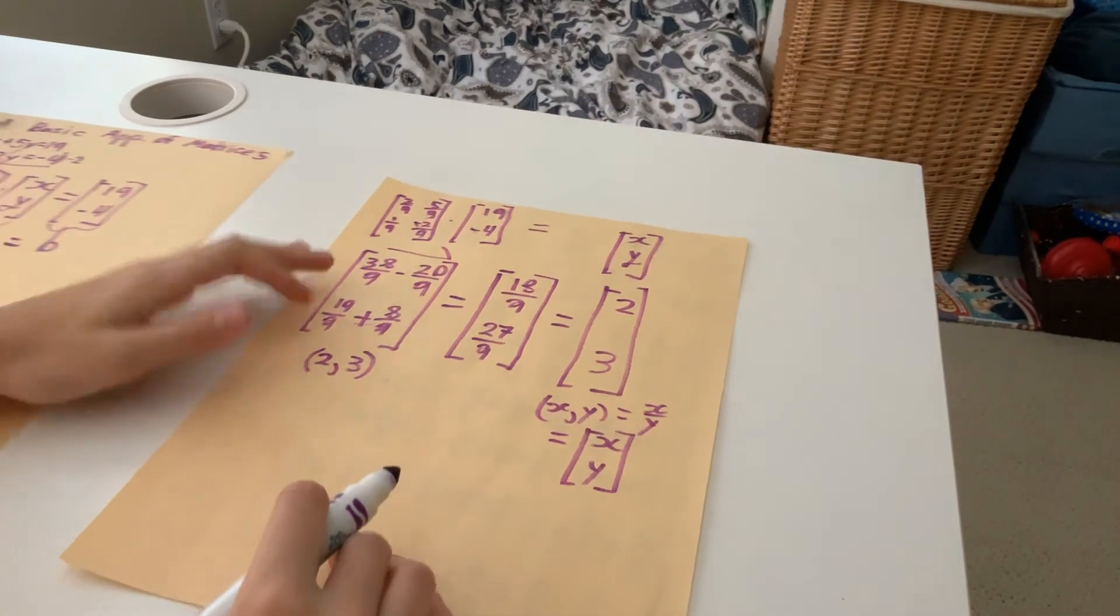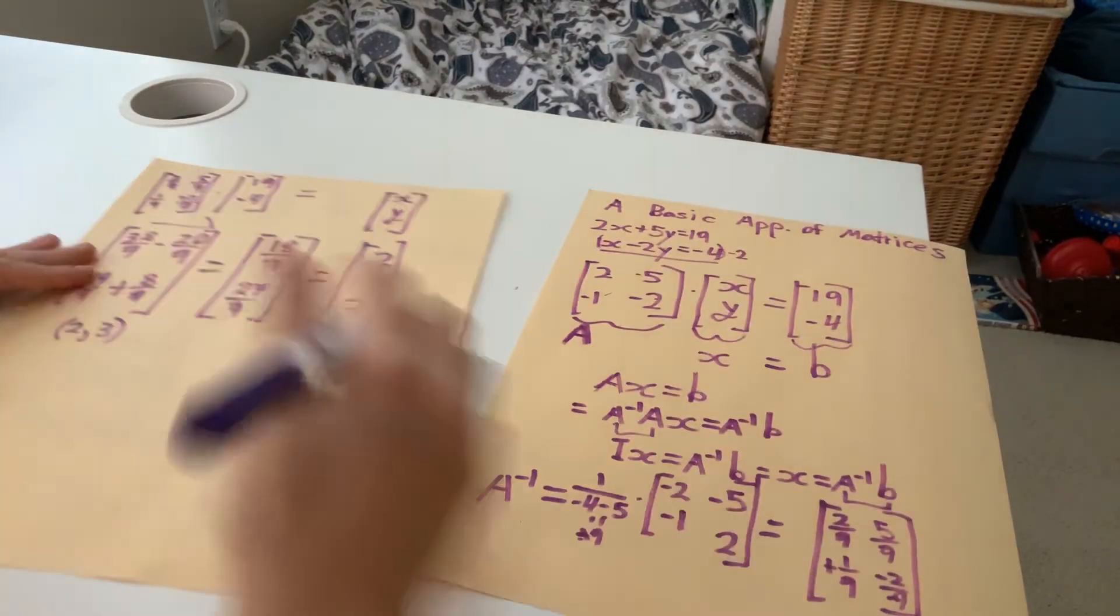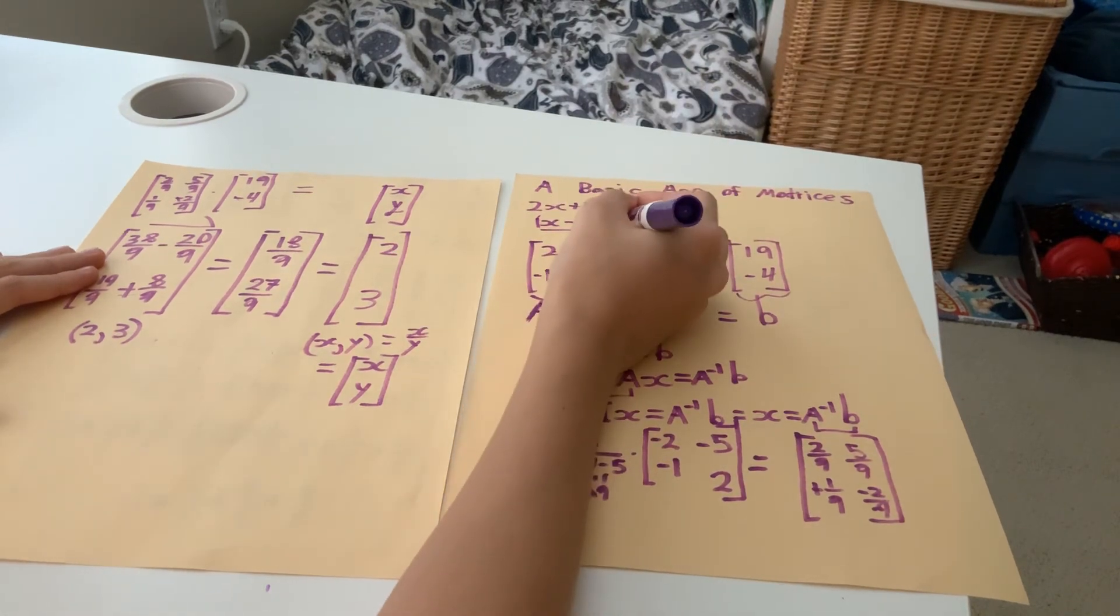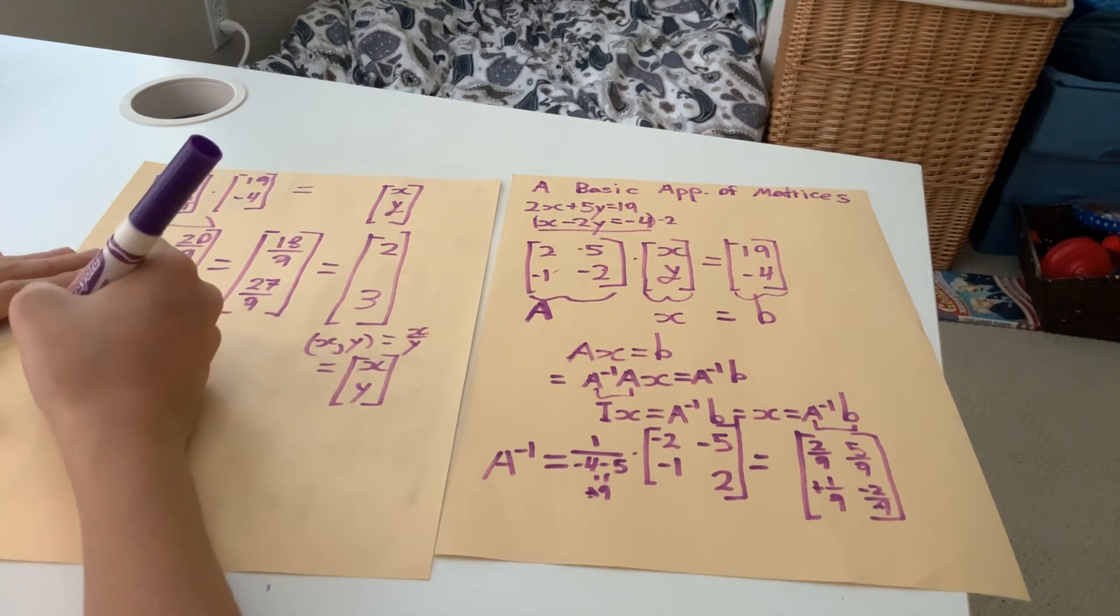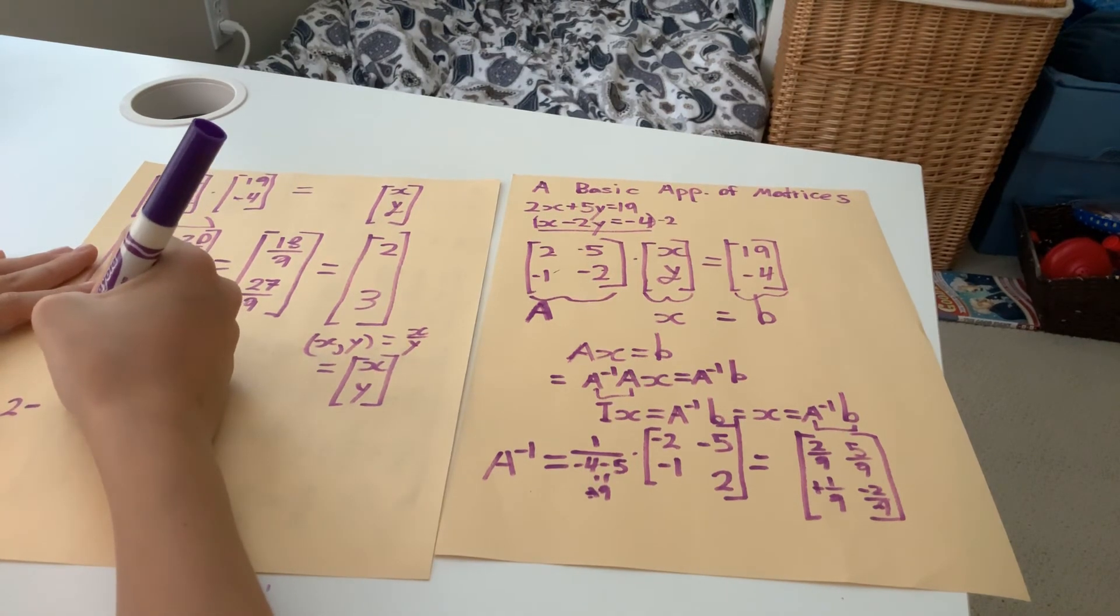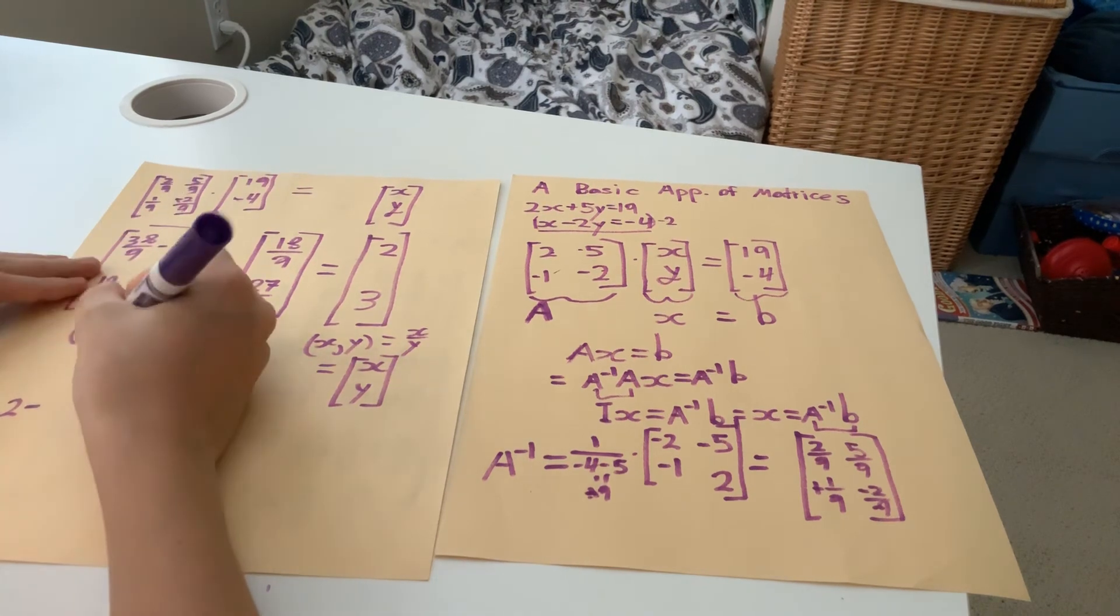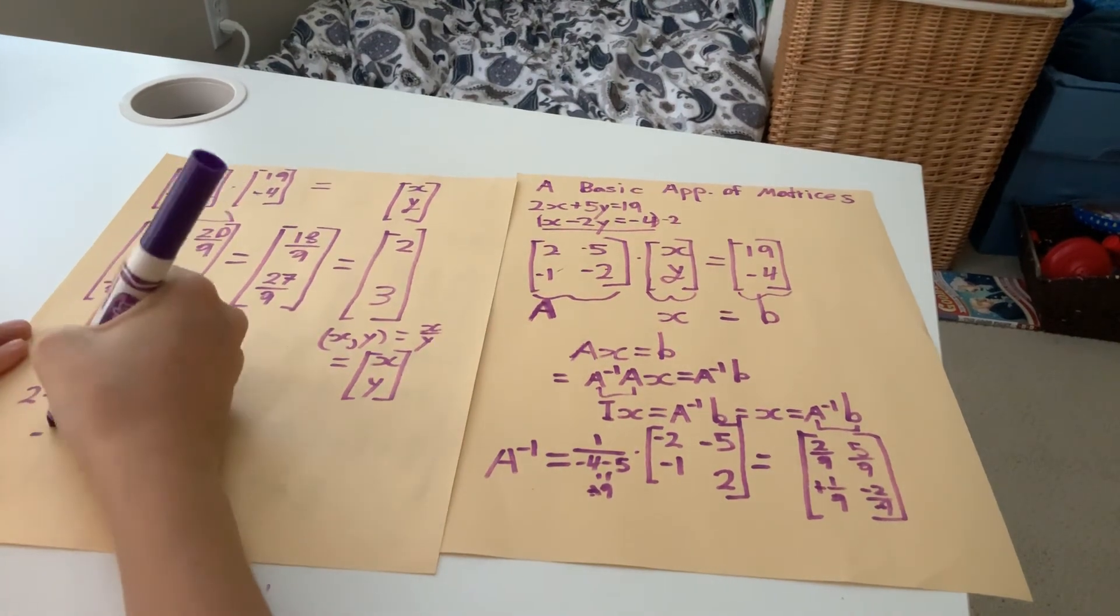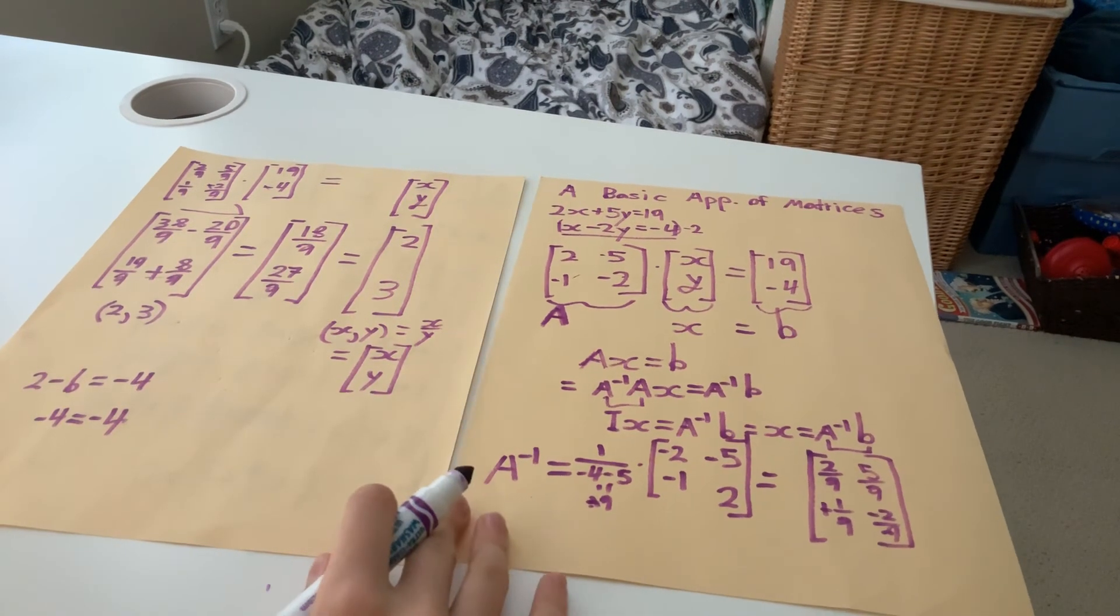So why don't we just plug this into our system of two equations. So we have x is equal to 2. So let's work with this equation, this one would actually be easier. x minus, let's set x equal to x, obviously. So 2 minus, why don't we just plug in y as well? Minus 6, because 3 minus 6 equals negative 4. And that is true, the equation holds true. Negative 4 is equal to negative 4. So this should be enough proof that this is the correct solution for both equations.